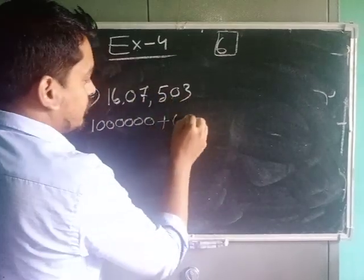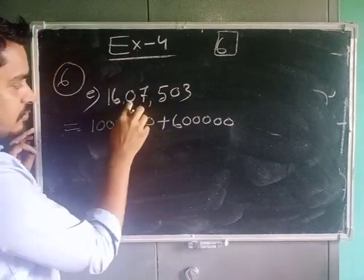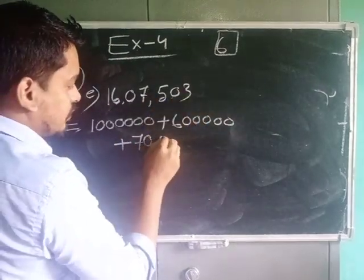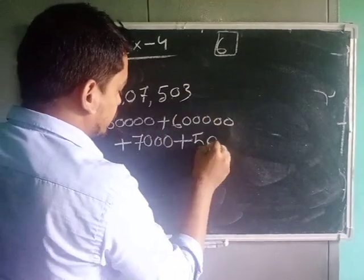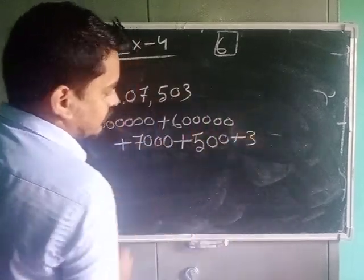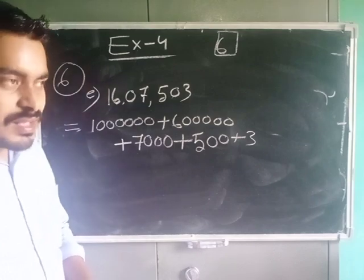1, 2, 3, 4, 5. Then after, for 0 no need to write. 7 you see 1, 2, 3. So 7, 0, 0. Plus 5, 0, 0. For 0 no need to write, for 3 only 3. In this way you have already learned this in standard three, that is why I am not discussing here and all of you can, I know.